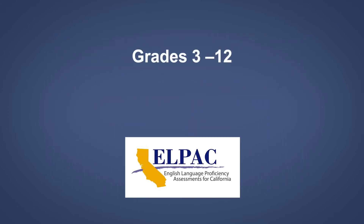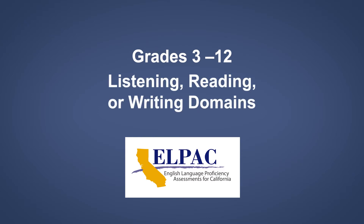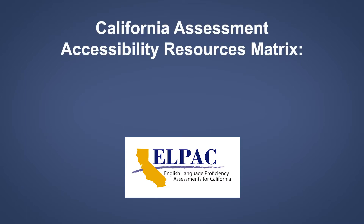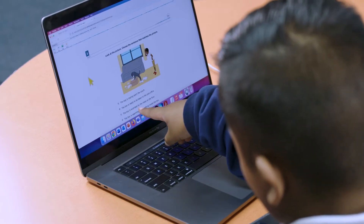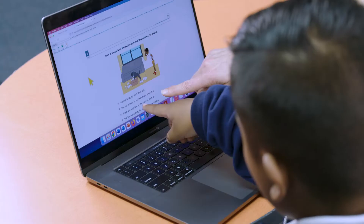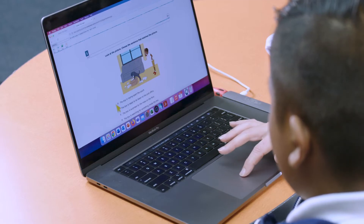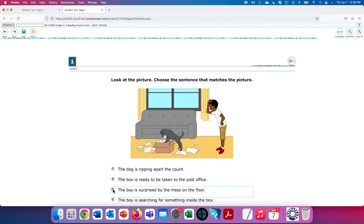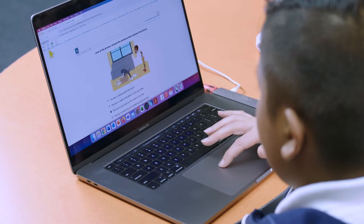They are available to students in grades 3 through 12 for the Listening, Reading, or Writing domains of the ELPAC. For more information, refer to the California Assessment Accessibility Resources matrix by visiting bit.ly/CA_matrix. A TNA and a DIA must be a trained ELPAC test examiner who is administering the assessment. Only students navigating the test independently might need a TNA or a DIA — therefore, those would be students in grades 3 through 12.